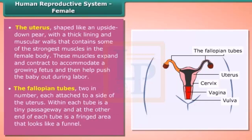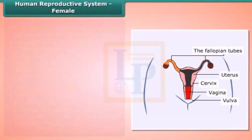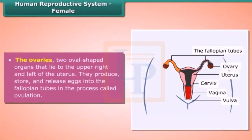The fallopian tubes, two in number, are each attached to a side of the uterus. Within each tube is a tiny passageway, and at the other end is a fringed area that looks like a funnel. The ovaries are two oval-shaped organs that lie to the upper right and left of the uterus. They produce, store, and release eggs into the fallopian tubes in the process called ovulation.